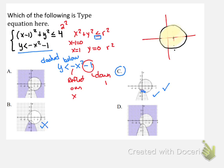This answer here would have been x minus 1 squared plus y squared greater than or equal to 4, and then y is less than negative x squared minus 1.